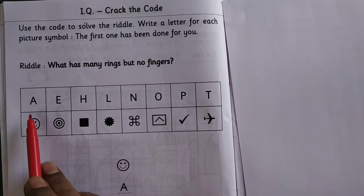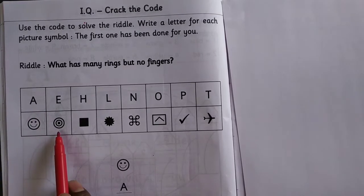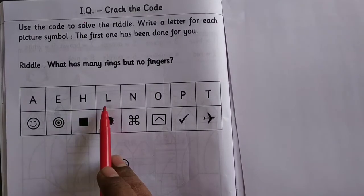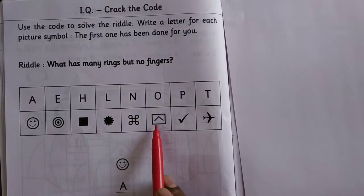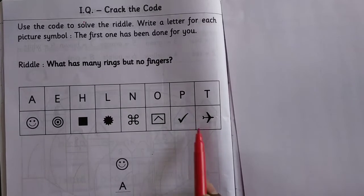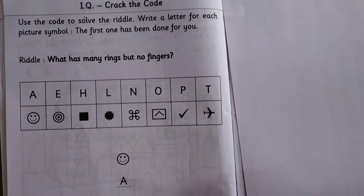The picture is like this: A, E, H, L, N, O, P, T. You have to write these letters. Okay, let us see now.